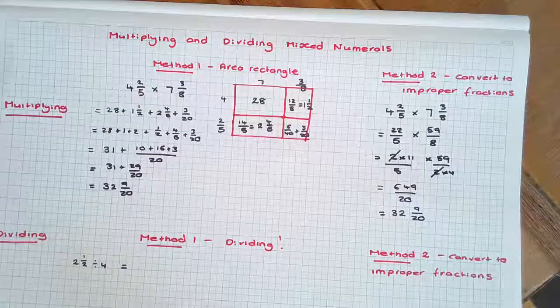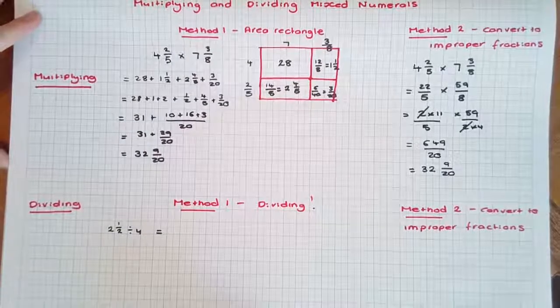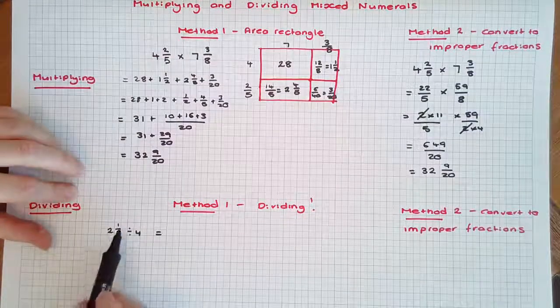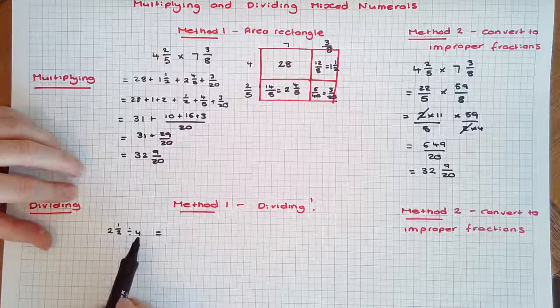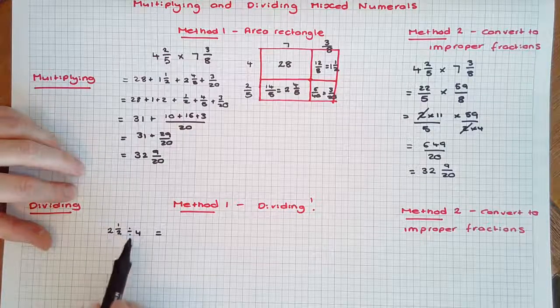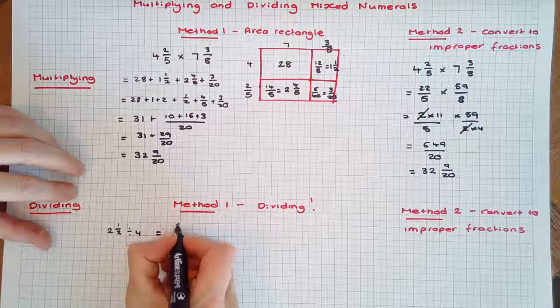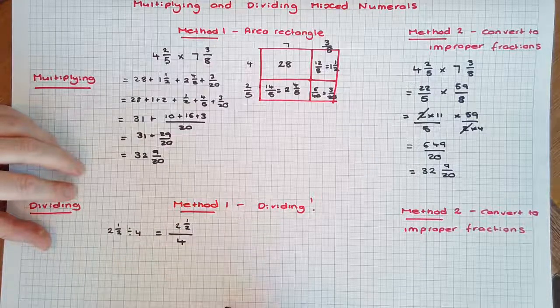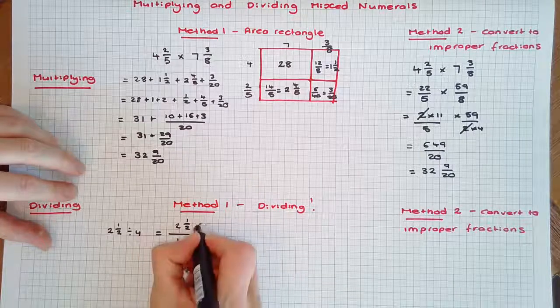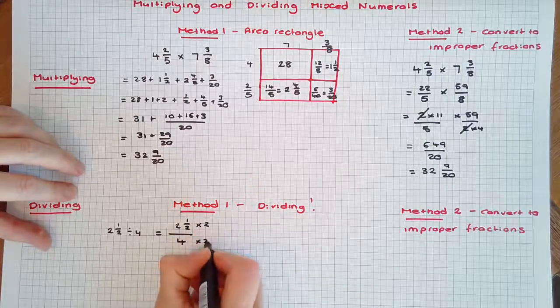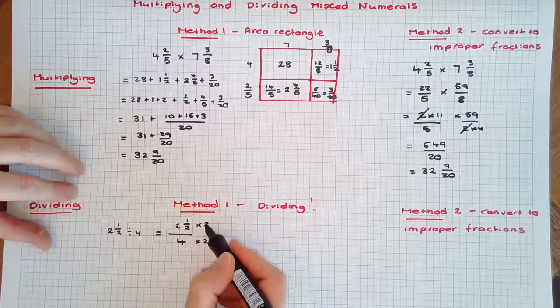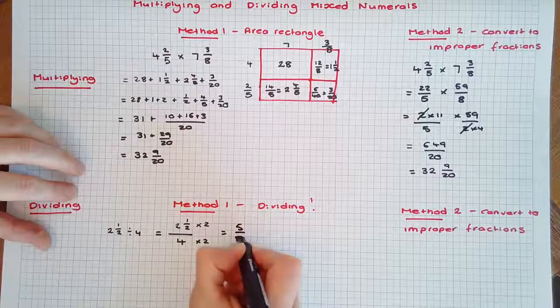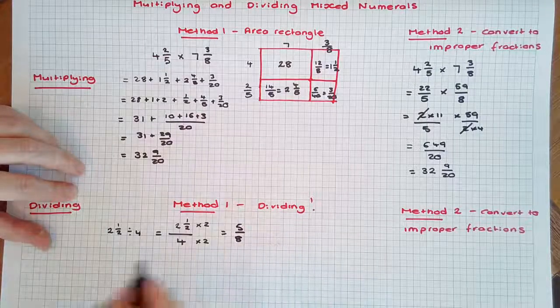Now let's look at division. Method 1: suppose 2 1/2 cakes were shared equally among 4 people. That is 2 1/2 divided by 4. We can set it up as a fraction: 2 1/2 over 4. Now a fraction in the numerator is a bit irritating, so let's multiply the numerator and the denominator by 2. Whatever we do to the numerator, we must do to the denominator. We're left with 5/8, which is our answer.